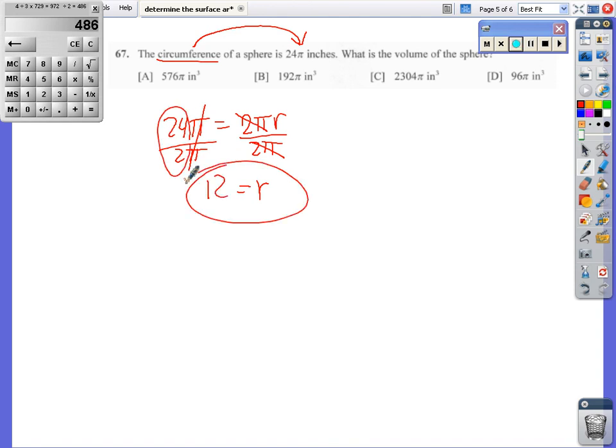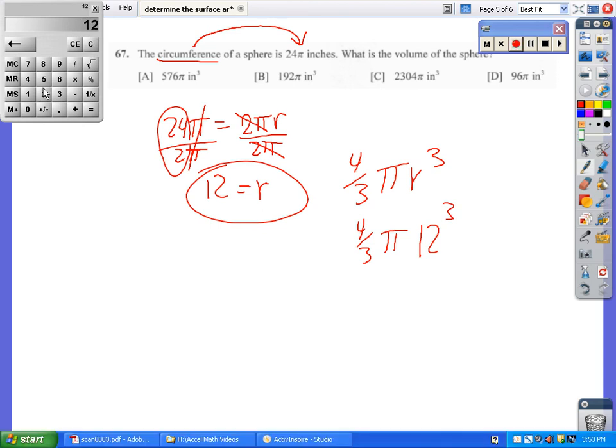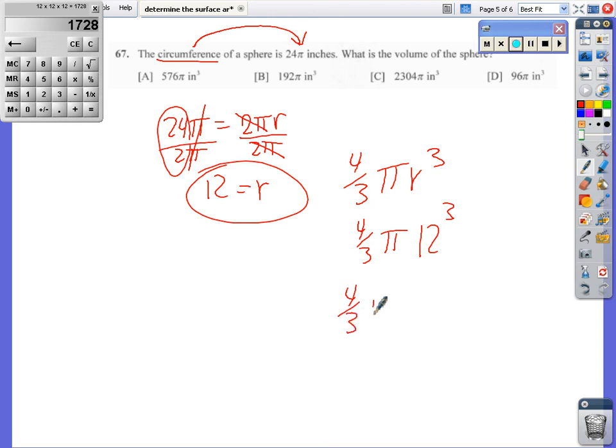Go straight to the formula. 4/3 pi r cubed, 4/3 pi, the radius in this case is 12, and I do not know what 12 cubed is. And if I did, I would need to find some extra stuff to do in my spare time. So 4/3 pi, 1728, so I'm going to do 1728 times 4/3, which I know is 1.3333 repeating.